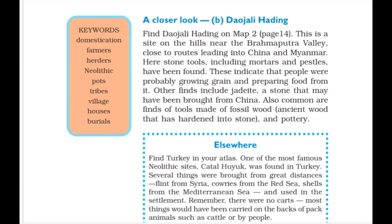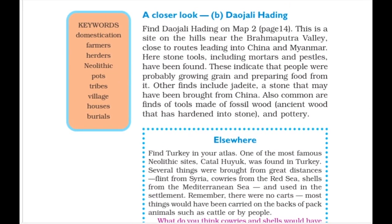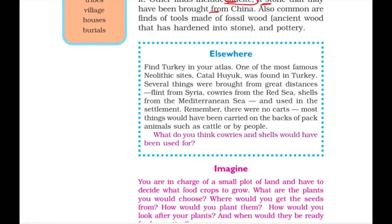Another unique site is Daojali Heading, located on hills near the Brahmaputra Valley, with roots close to China and Myanmar. Stone tools, mortars, and pestles were found here, probably used for grinding grains and preparing food. A stone called jadite was found here which must have been brought from China. NCERT also points out that Turkey and other regions had Neolithic sites — not just India. Kauri shells from the Red Sea were found here, and we know that kauris were later used as currency.